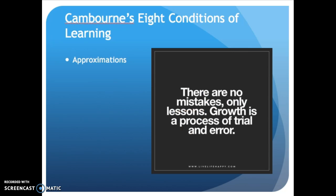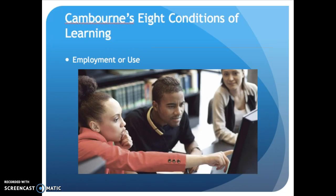The next is approximations — another word for mistakes. Approximations are viewed as part of the learning process; they're expected as part of trial and error learning. The next is employment or use: the skill is learned via opportunities to actually use it. You can see a big difference between critical mass versus use-oriented instruction when it comes to this particular condition of learning.